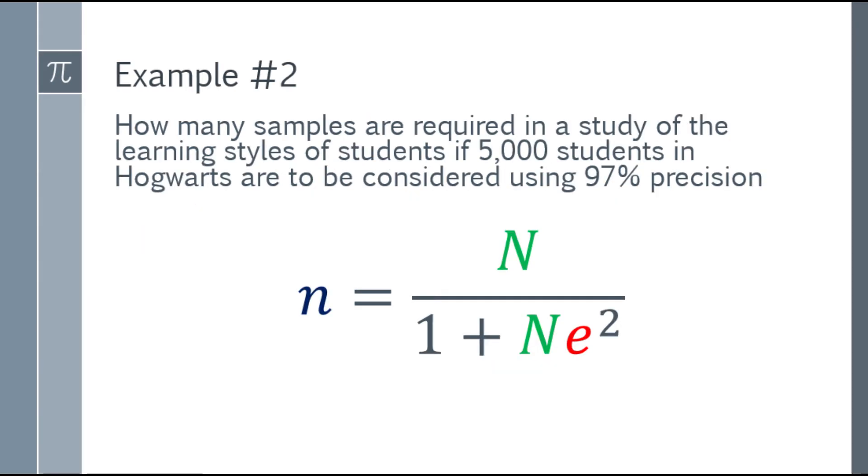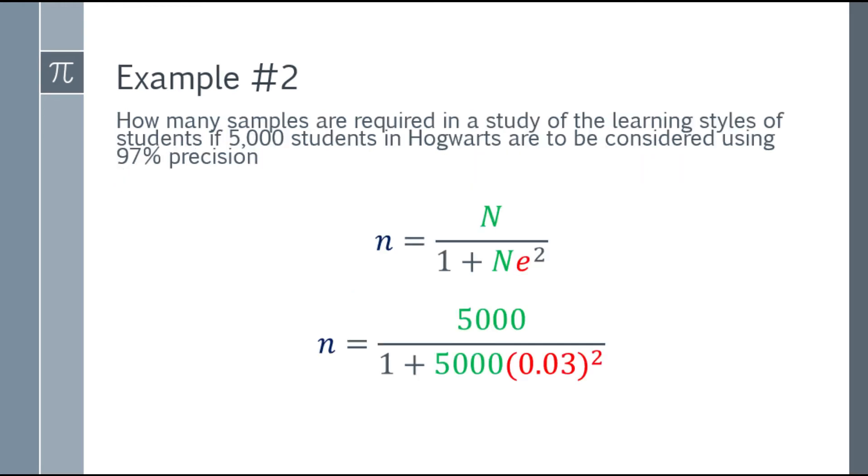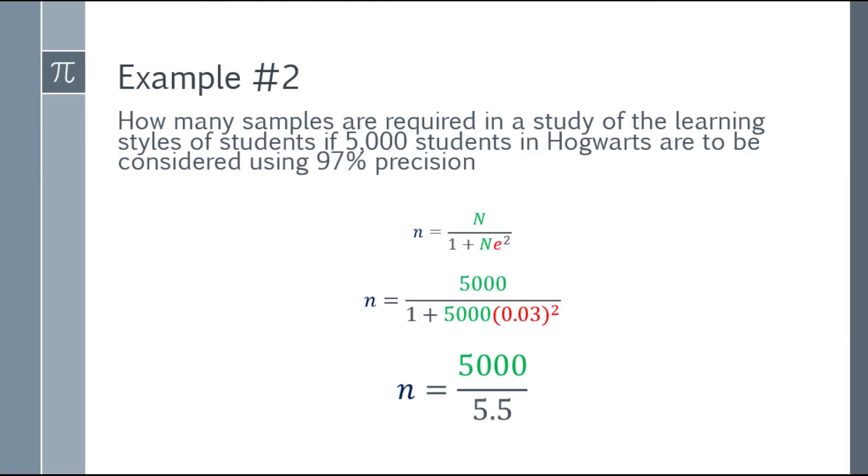So now that we have the margin of error and the population size, we can now solve for the sample size. So again, place the formula and then we can substitute the given. Sample size is equal to 5,000 over the quantity 1 plus 5,000 times 0.03 square. Always remember, do the square first. So 0.03 square first, then multiply by 5,000 and that's when you add 1. So the denominator will be 5.5 and the numerator will stay the same, that is 5,000.